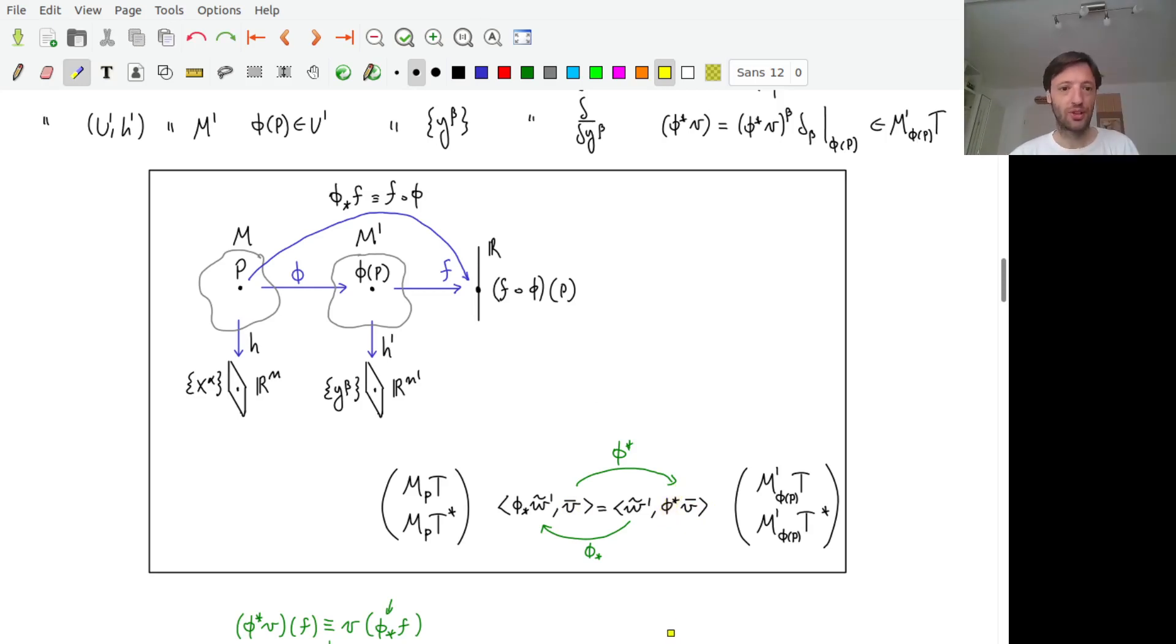With the constraint that the behavior of this vector on the tangent space on M here and of this vector on the tangent space of the manifold M' are actually behaving the same with respect to the one-forms that are living into the two respective tangent spaces.